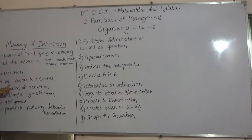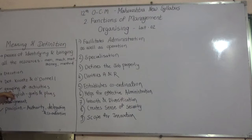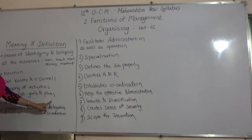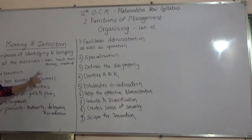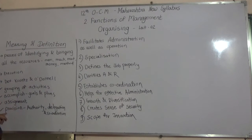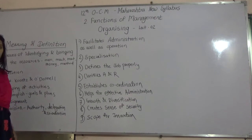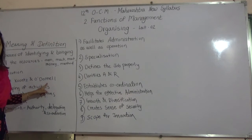According to Koontz and O'Donnell, organizing is the grouping of activities. This grouping of activities is done to accomplish the goals and plans. Whatever goals and plans have been decided in planning, in organizing we start to accomplish and achieve those goals. For that purpose, you start assigning work, providing authority, delegation, and coordination — all these things are covered in Koontz and O'Donnell's definition.